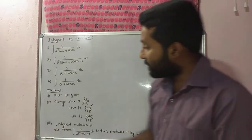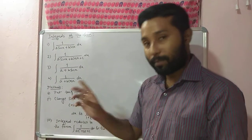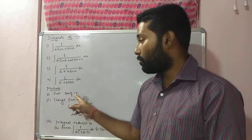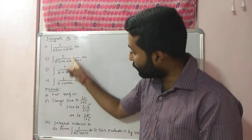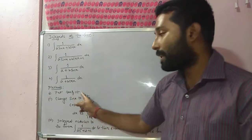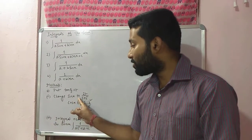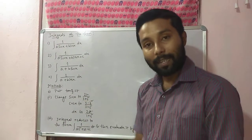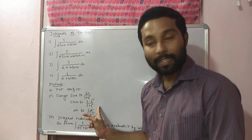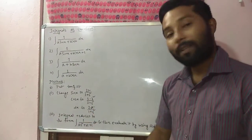The first step is to put tan(x/2) equal to t. The second step is to change sin x to 2t/(1+t²), cos x to (1-t²)/(1+t²), and dx to 2dt/(1+t²).